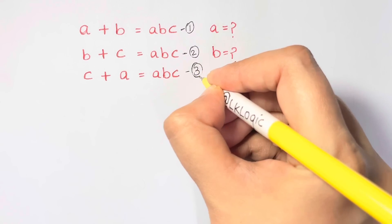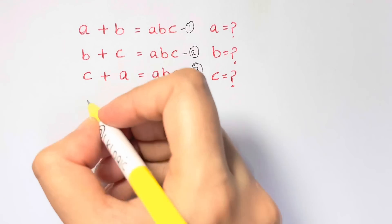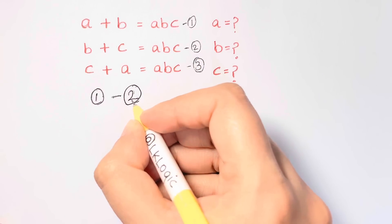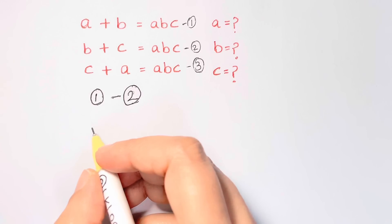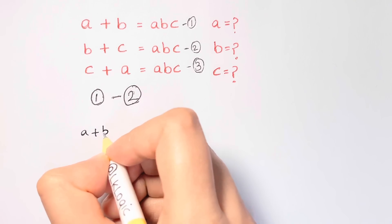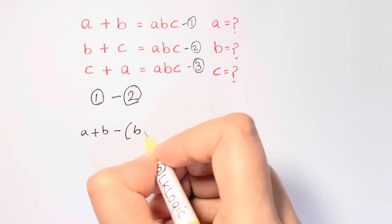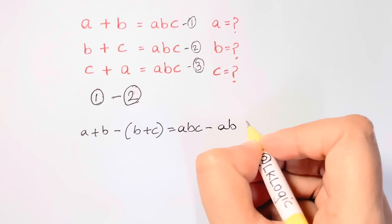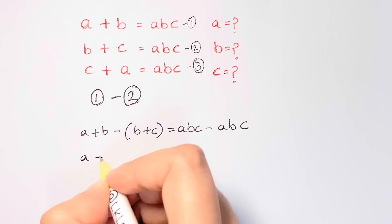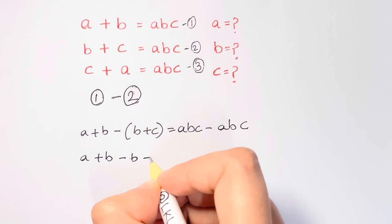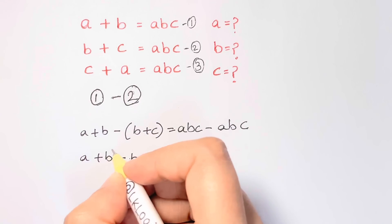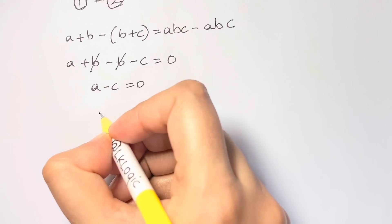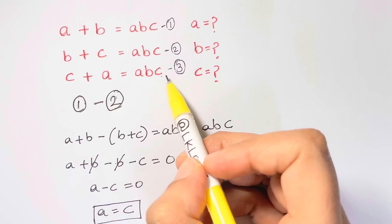The first step: subtract equation two from equation one. We get a plus b minus b plus c, which equals abc minus abc, so that's zero. Simplifying, a plus b minus b minus c equals zero. The b's cancel, so a minus c equals zero, meaning a is equal to c.